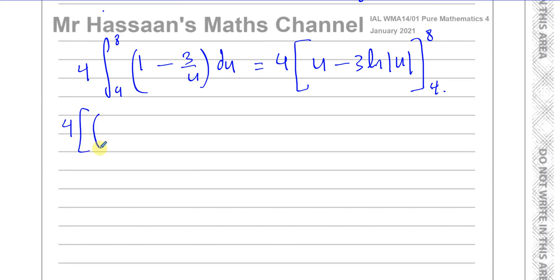We're going to have 4 times, I'm going to first put the 8 into here, so it'll be 8 minus 3 ln 8. I don't have to put modulus because the modulus of 8 is positive. Then I have minus, and then I'm going to put here 4 into here, that's 4 minus 3 times the ln of 4.